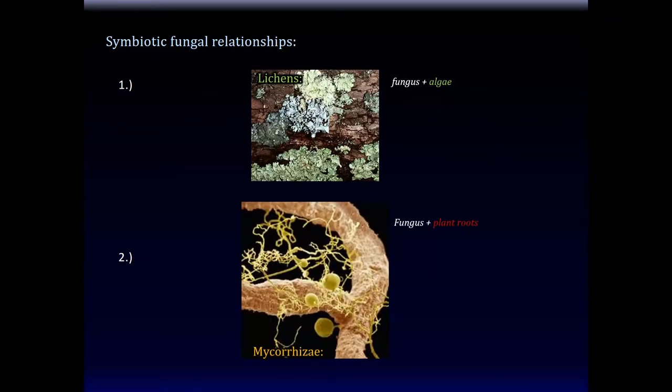Another thing was the fungus relationship with plants. Just like some algae had a relationship with plants, some fungi are going to do the same thing. This is mycorrhizae — the fungus plus a plant. They attach to the roots of the plant, which increases the surface area for absorption for the plants, and it gives free meals to the fungus.